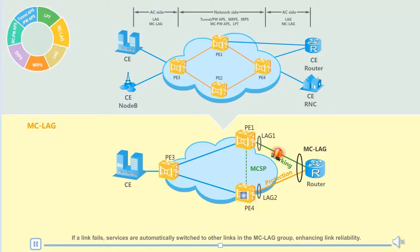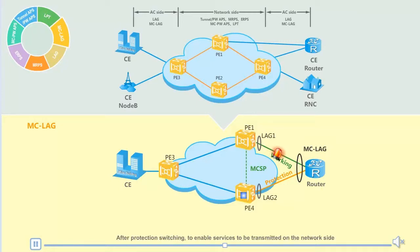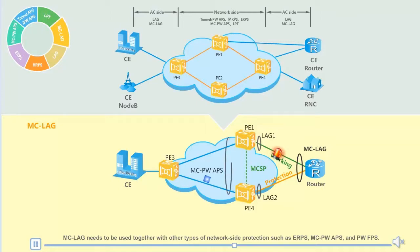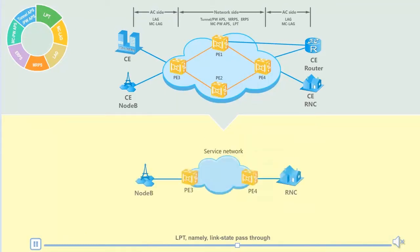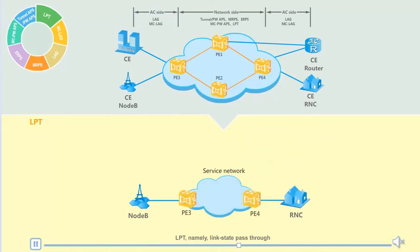MC-LAG mainly applies to dual homing scenarios after protection switching to enable services to be transmitted. On the network side, MC-LAG needs to be used together with other types of network protections such as ERPS, MC-PWAPS, MPWFPS, and LPD — namely link state path-through.